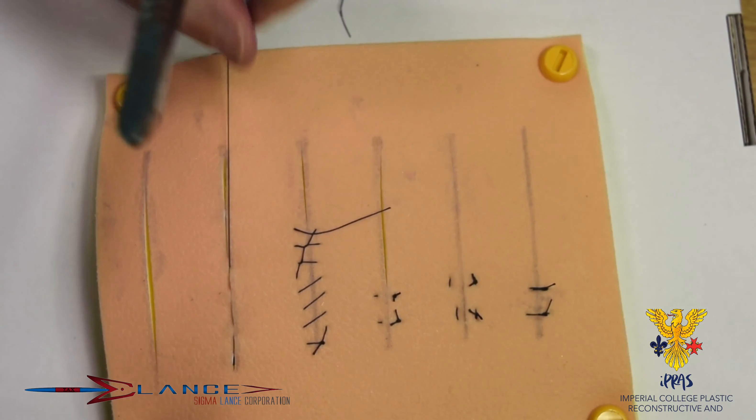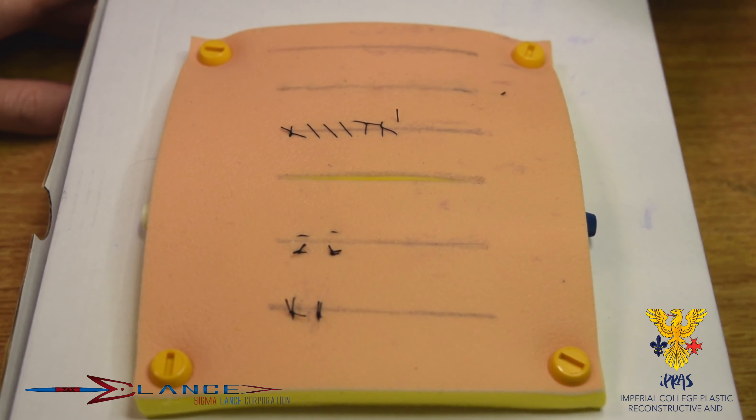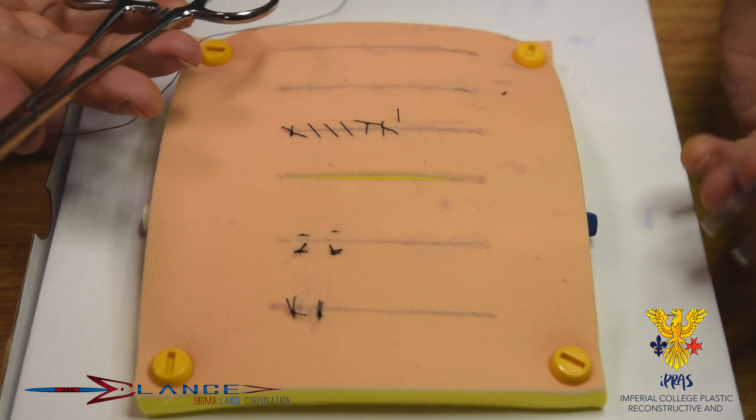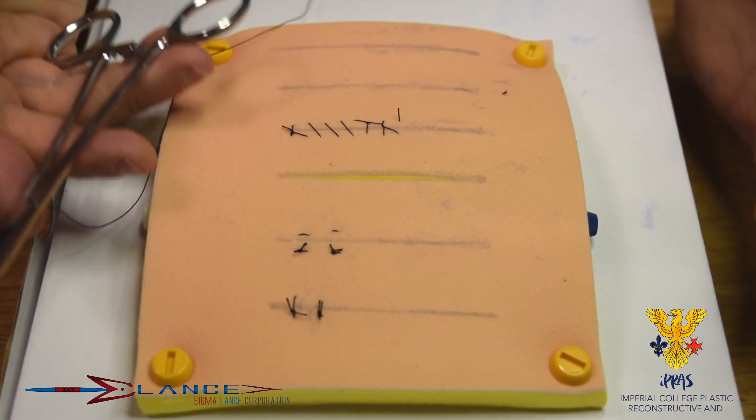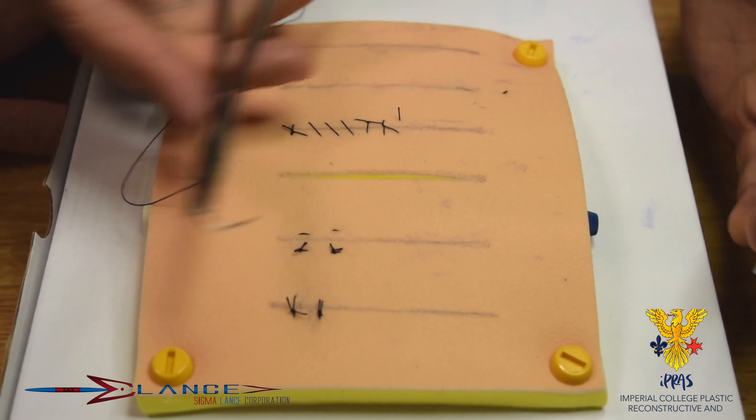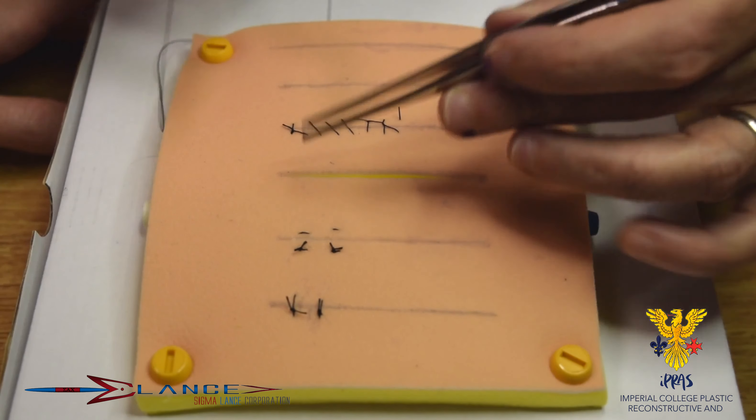We'll do that maybe perhaps at the end. Okay, so we're going to demonstrate the subcuticular stitch again. Just talking about where hands should be, how the wound should run, really the wound should be running at 90 degrees to your hand, so that's the natural way of closing the wound. Any other way makes the closure much more difficult. So you should be square onto the patient.